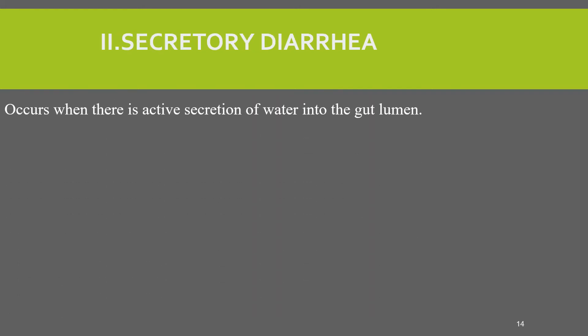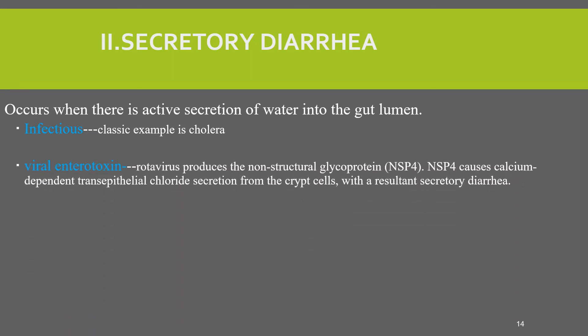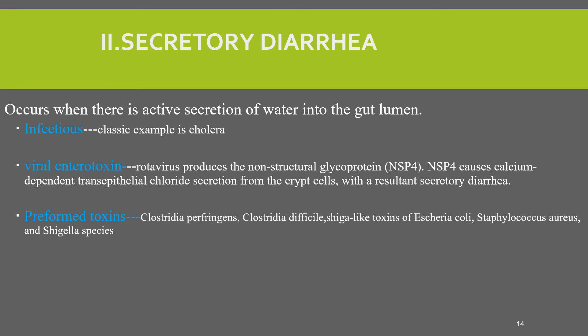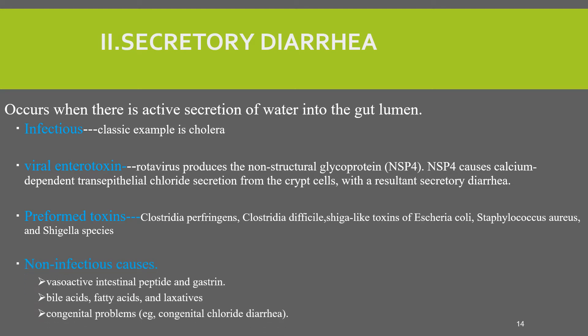The second mechanism is secretory diarrhea. This occurs when there is active secretion of water into the gut lumen. Infectious causes include cholera and viral enterotoxins such as rotavirus. Rotavirus produces a non-structural glycoprotein which causes calcium-dependent trans-epithelial chloride secretion from the crypt cells, resulting in secretory diarrhea. Preformed toxins can also cause secretory diarrhea — for example, Clostridium perfringens, Clostridium difficile, and Shiga-like toxin. Non-infectious causes include congenital problems such as congenital chloride diarrhea, bile acids, fatty acids, laxatives, vasoactive intestinal peptide, and gastrin.